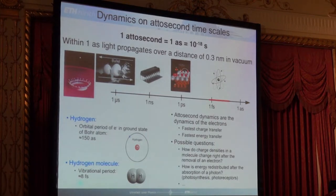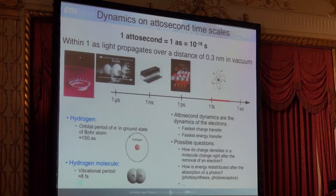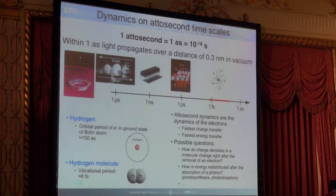When you go about attosecond science, let's just be clear: an attosecond is a thousandth of a femtosecond, so it's 10 to the minus 18 seconds. This is the timescale of electronic dynamics on atomic scale. The orbital period in the ground state of a Bohr atom is about 150 attoseconds. The hydrogen molecular vibrational period is eight femtoseconds, which we can resolve extremely well. What we are interested in is really to resolve energy and charge transport on an atomic level — within atoms, molecules, and surfaces. Because this is quantum mechanics, people have different opinions, some of which I will show during this talk.